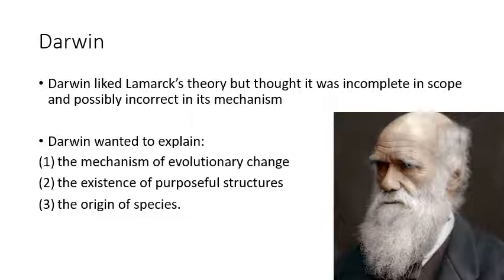Darwin went back to school for seminary, decided that wasn't for him, then switched to a geology-related field. He was interested in insects, and there was a big overlap between geology and biology. At the time there was also a very rigid class structure — people from certain classes were not expected to interact with others. A ship's captain tasked with charting the coast of South America needed someone from a similar class to socialize with, so captains would hire on naturalists and scientists for sea voyages.